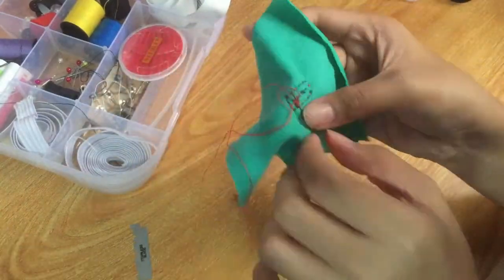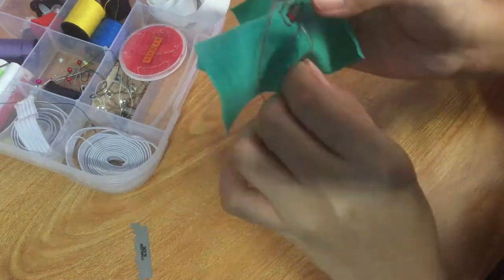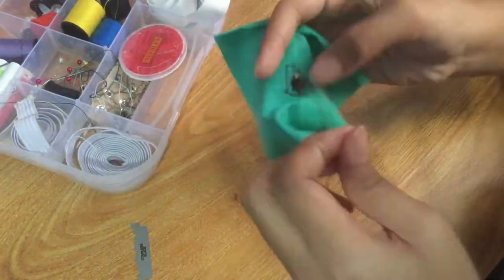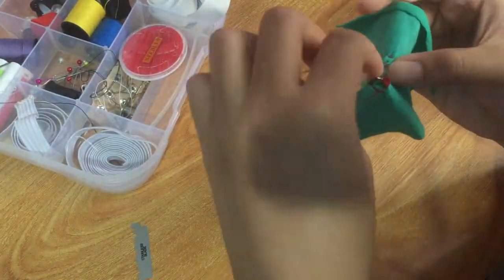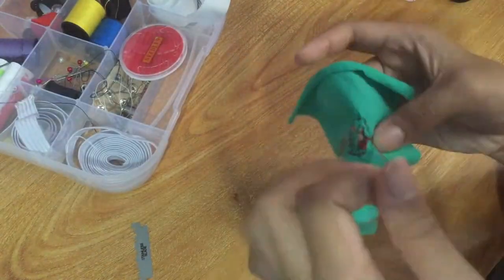Step 3. Cut your buttonhole and mark the ends with a straight pin. Now start stitching using your buttonhole stitch.